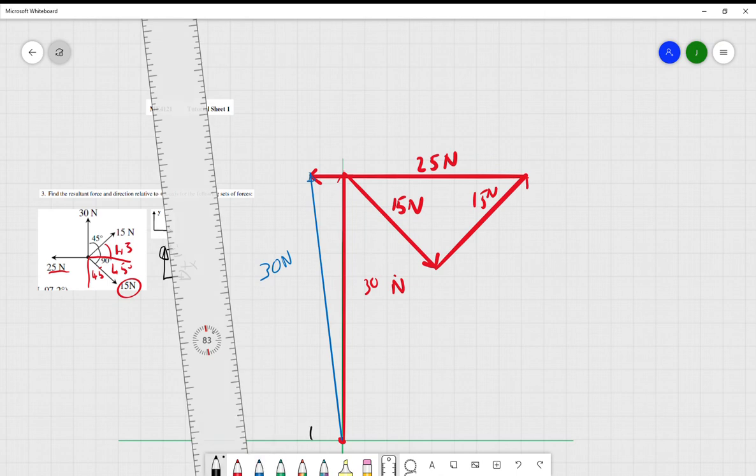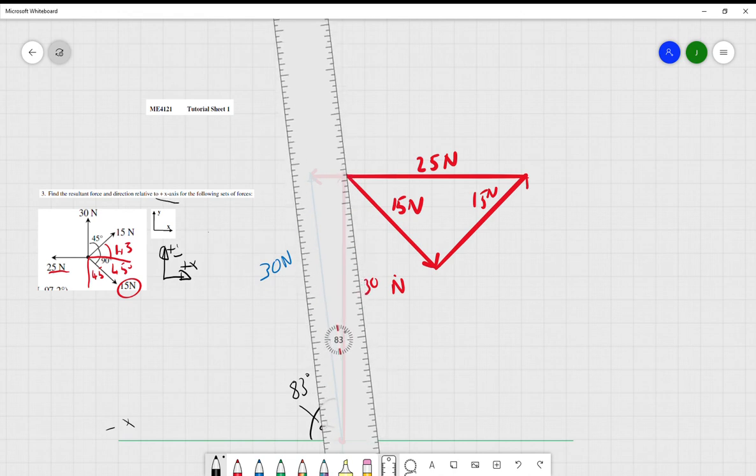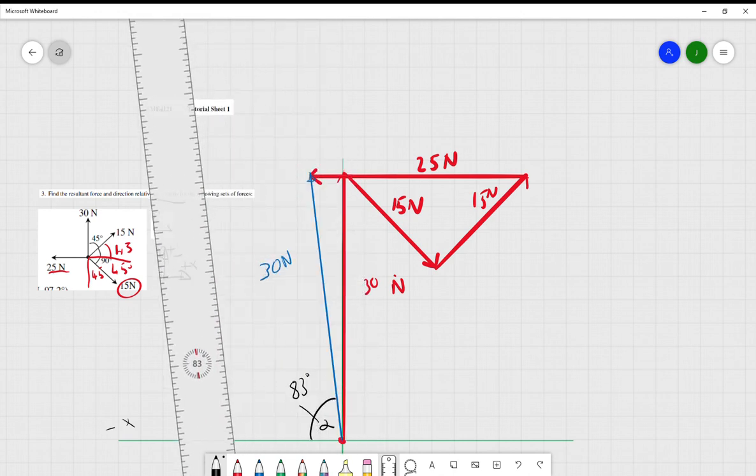What this is saying is 83 here is actually the alpha—be careful there. It's the alpha value. This is 83 degrees from the negative x direction, whereas in the question, don't forget, it asks relative to the positive x axis.